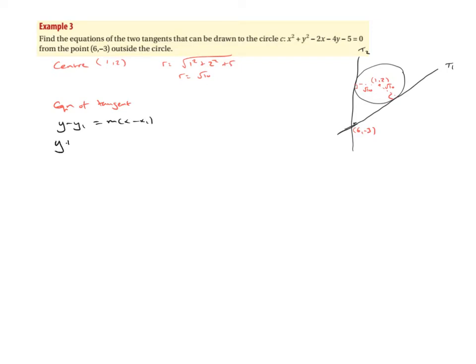Using y - y₁ = m(x - x₁), with the external point (6, -3) — not the center — we get y + 3 = m(x - 6). Rearranging to standard form: mx - y - 3 - 6m = 0. It's important to choose the point (6, -3) since both tangents pass through that point.